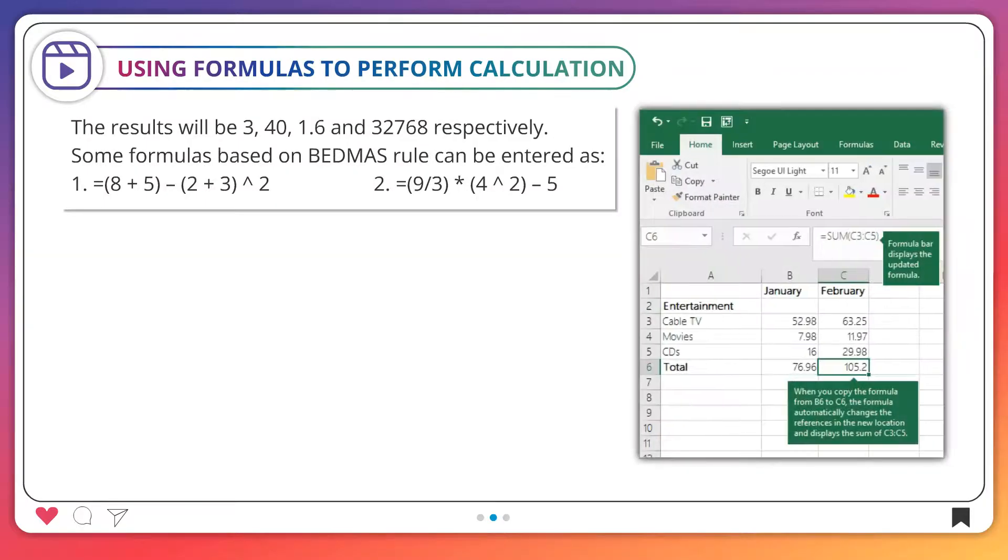The results will be 3, 40, 1.6 and 32,768 respectively. Some formulas based on BEDMAS rule can be entered as 1 is equal to 8 plus 5 minus 2 plus 3 exponent 2. 2 is equal to 9 by 3 multiplied 4 exponent 2 minus 5.